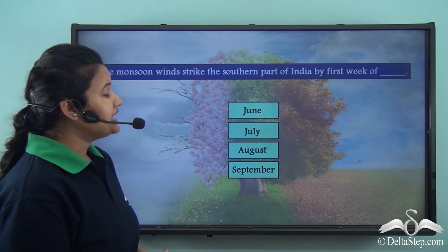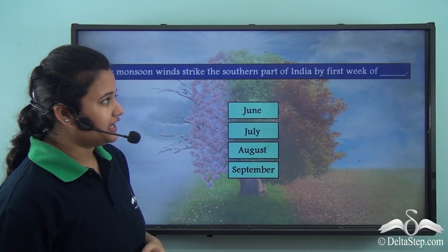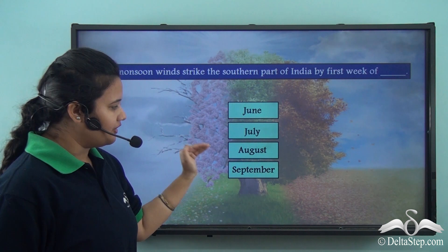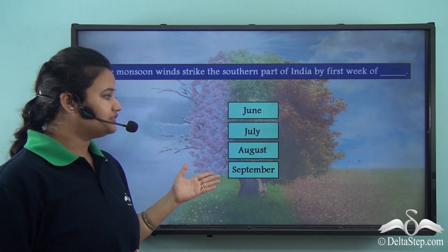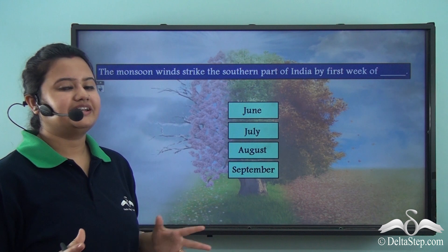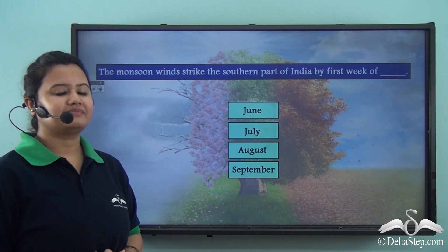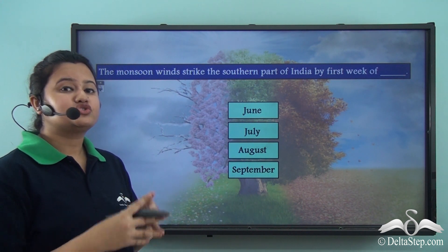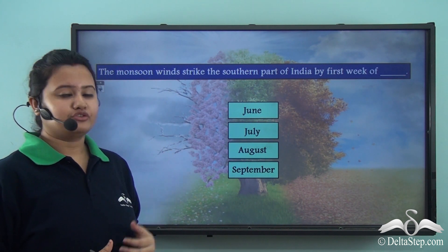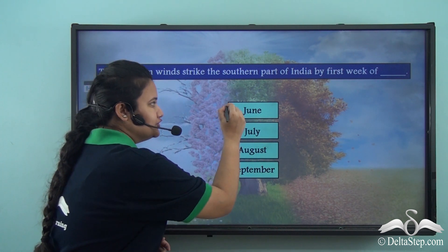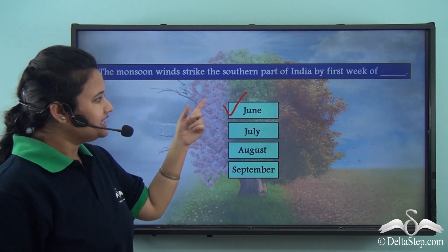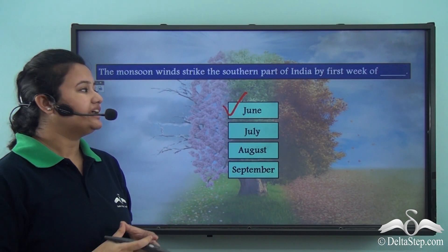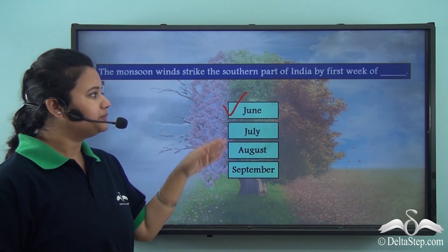The monsoon winds strike the southern part of India by the first week of which month — June, July, August, or September? We just read that monsoon winds strike the southernmost part of India by the first week of June. So the correct option is June. In fact, the southernmost part of India is the first to receive these monsoon winds.